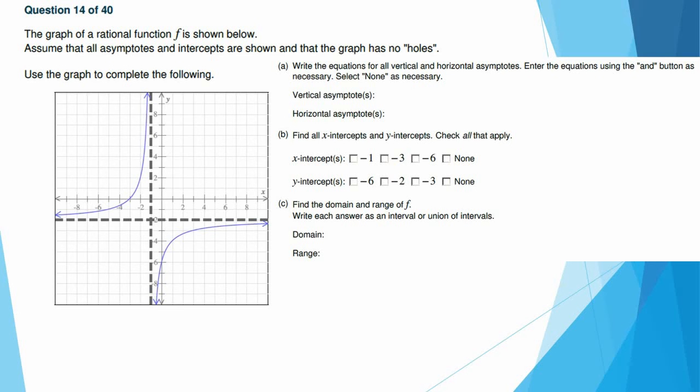Here we are given a graph and we want to assume that all the asymptotes and intercepts are shown and the graph has no holes. So our vertical asymptotes occur here, which is at x equals negative 1. Our horizontal asymptote happens in here, which is y equals 2. Our x-intercepts, anywhere it crosses the x-axis, here is the only place, and that's at negative 3. Our y-intercepts are anywhere it crosses the y-axis, which is there, which is at 6, negative 6.